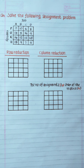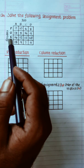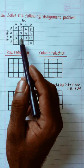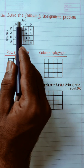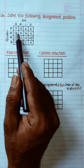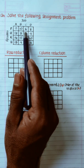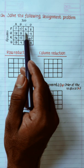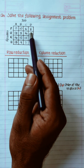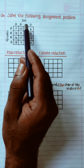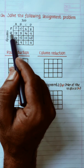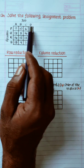Hi students, here is the assignment problem. I will tell you what the assignment problem is. There are 4 persons and 4 jobs. If one person is assigned to one job, then there is a minimum assignment. If the person is assigned to 4 jobs, then there is a cost table.